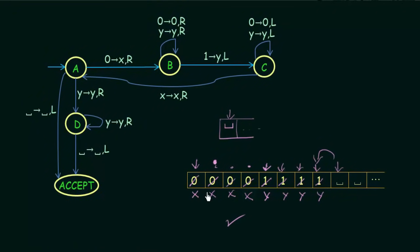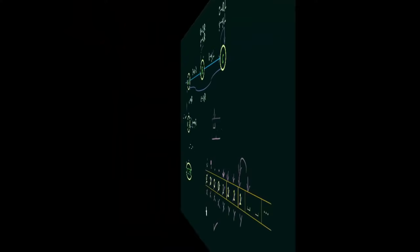Here we see that on the tape all the 0s are replaced with x and all the 1s are replaced with y. And if it is not finding a corresponding 1 for a particular 0, then it shows that that particular string does not belong to the language.